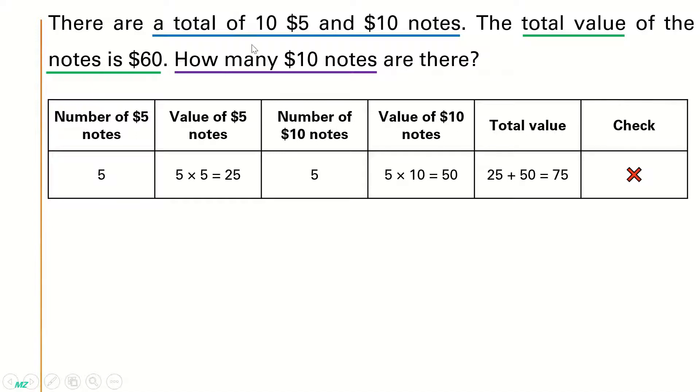Because the total number of notes is equal to 10, we have 5 five-dollar notes and 5 ten-dollar notes for our first guess. So 5 times 5 will be $25. 5 times 10 will be $50. $25 plus $50, we get $75. And this is wrong because we need to get $60.